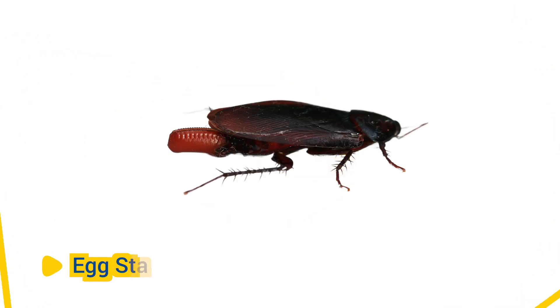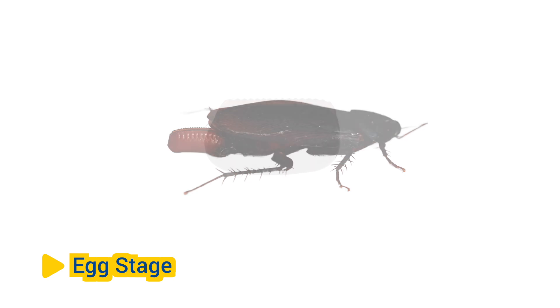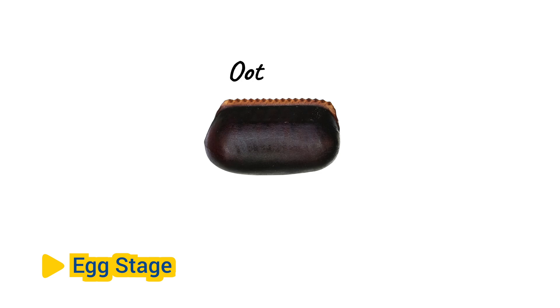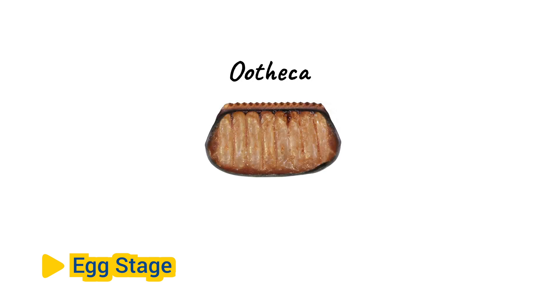Egg stage. The life cycle begins when a female cockroach lays eggs, usually in a protected location near food sources and moisture. Cockroach eggs are typically encased in protective cases called oothicae, which contain multiple eggs. The time it takes for the eggs to hatch varies depending on the species and environmental conditions.